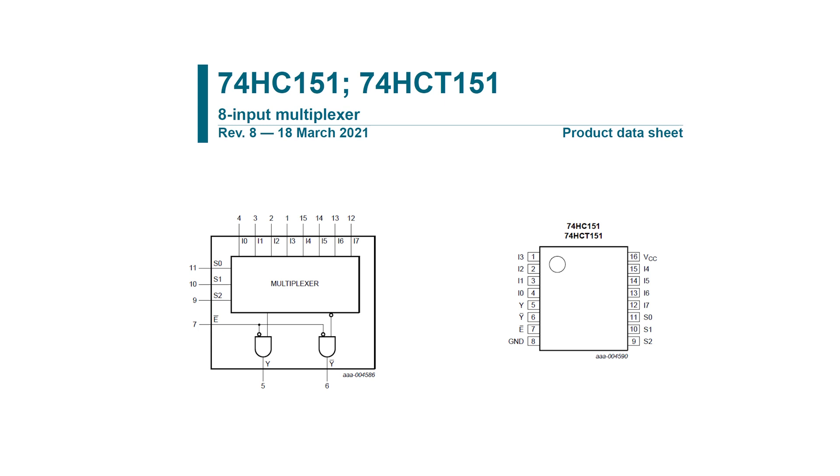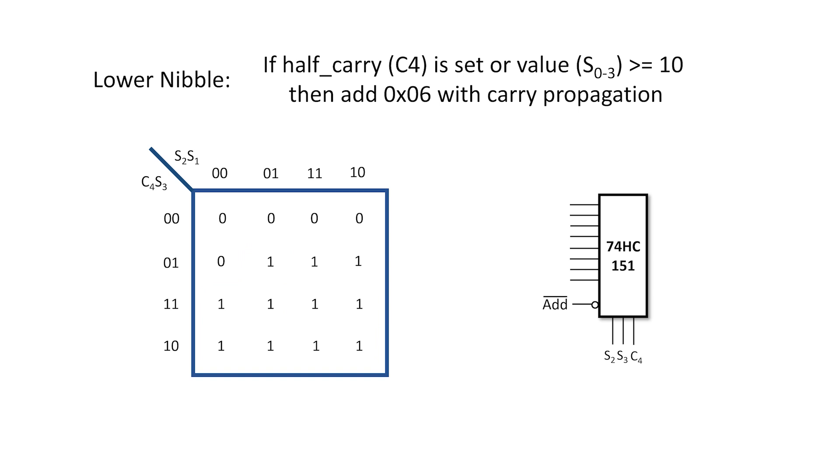Here's a trick for new players. One way to implement a 4-input Karnaugh map is to use the 74HC151, which is an 8-to-1 multiplexer. Three of our signals select the input, in this case S2, S3, and C4, then each pair on this Karnaugh map is an input to the 74HC151. Inputs 0 and 1 are both 0.